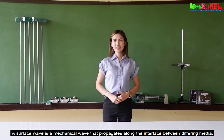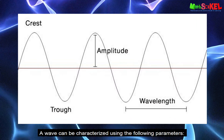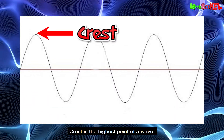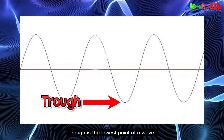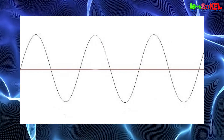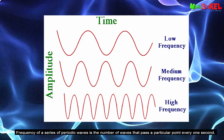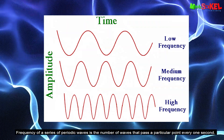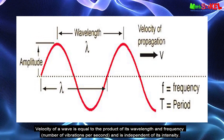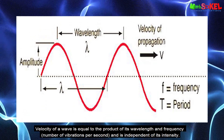A surface wave is a mechanical wave that propagates along the interface between differing mediums. A wave can be characterized using the following parameters: Crest is the highest point of a wave. Trough is the lowest point of a wave. Amplitude is the height of a wave. Wavelength is the distance between successive crests or troughs. Frequency is the number of waves that pass a particular point every one second. Velocity of a wave is equal to the product of its wavelength and frequency, and is dependent on its medium.